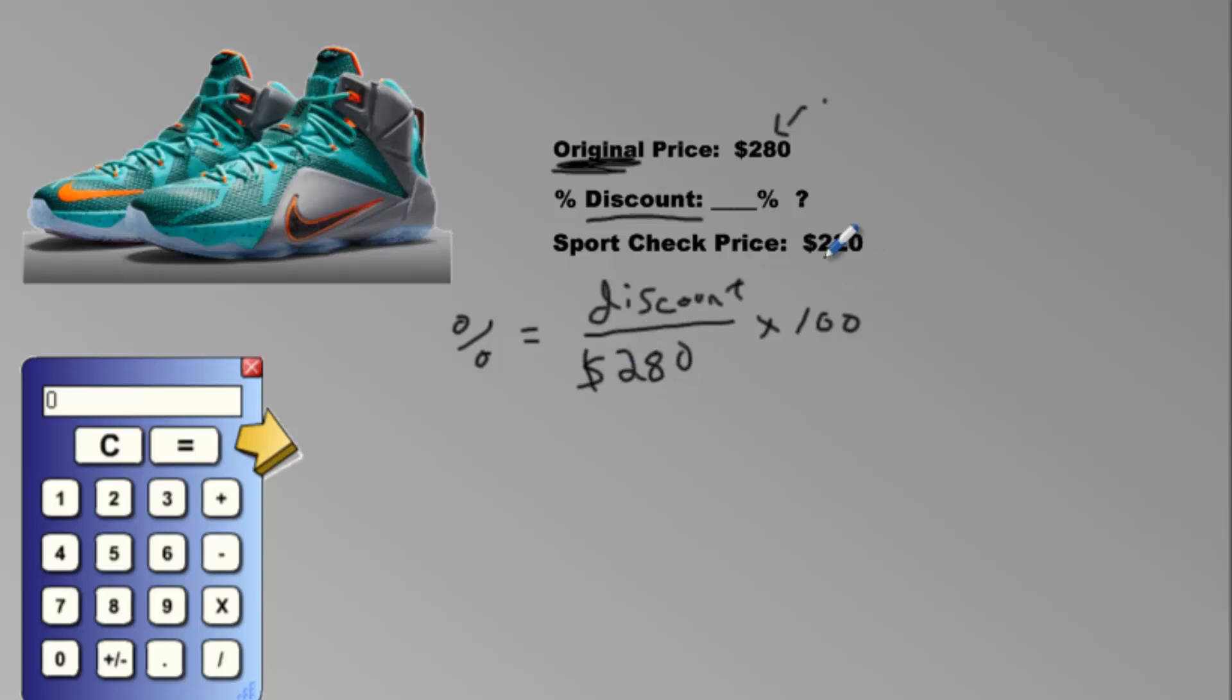You know why? Because this price over here didn't even exist yet until SportCheck created it. So it didn't even exist yet. So why would we use something that didn't even exist yet? We are using the original. You divide, you multiply, you get your answer.